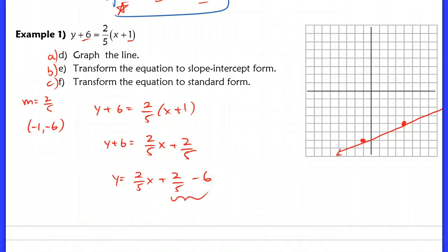Now when you guys need to simplify this, make sure that when you're combining fractions here, you have to get common denominators. So I'm going to change this negative six into negative 30 over five. So if you have a question on that, go to the fractions review tutorial. It's under the algebra review tab. Anyway, when I go ahead and simplify this, I end up with two-fifths x minus 28-fifths. So this is the answer right here in slope-intercept form.